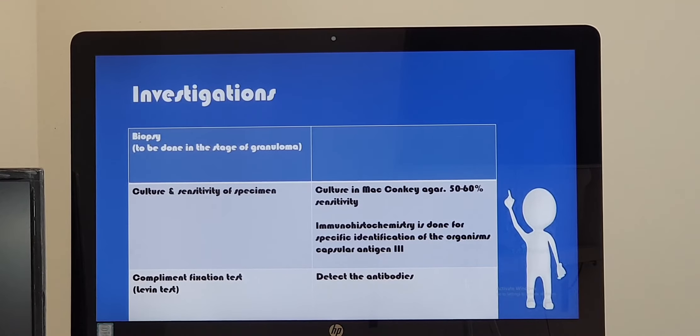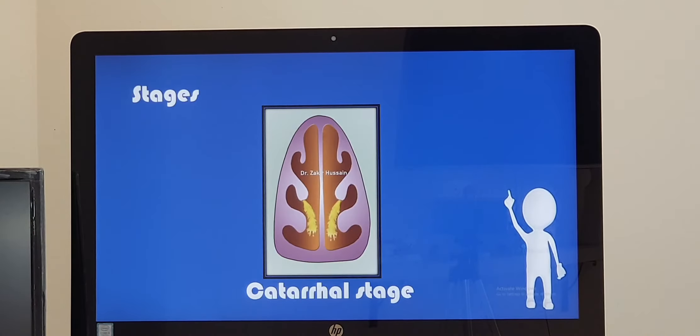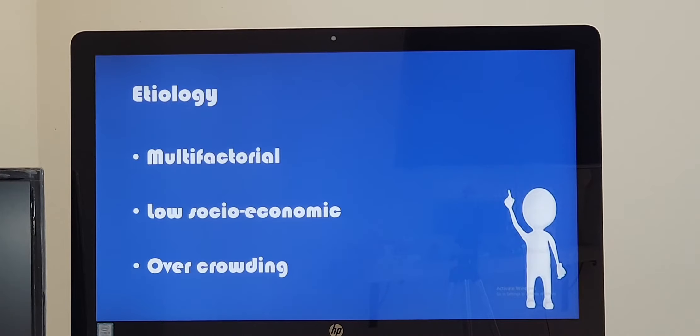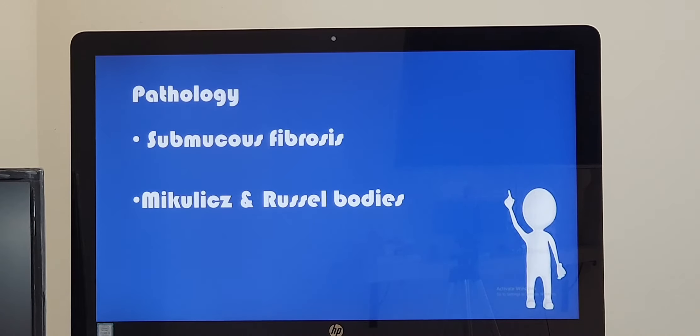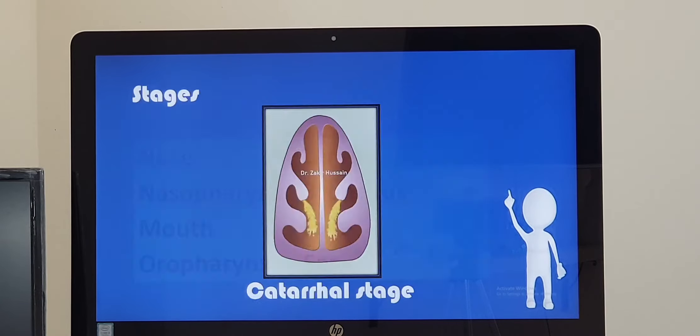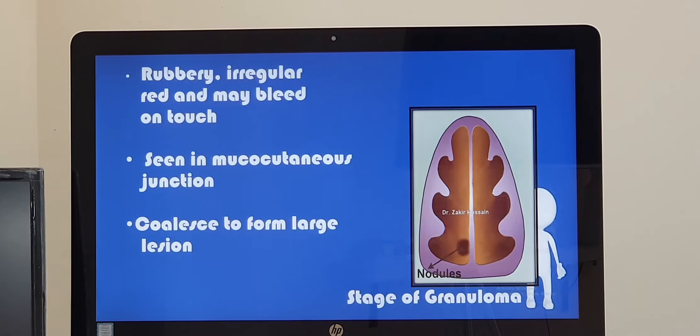Here in the biopsy, what you see is, the stage of granuloma, Mikulicz cells will be seen, like how we have mentioned before. Mikulicz cells will be seen, and Mikulicz cells, you have bacteria, bacteria inside. Bacilli can be seen.